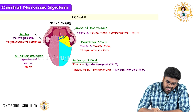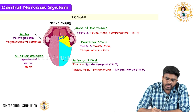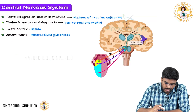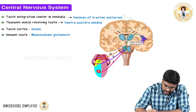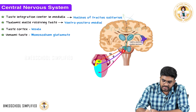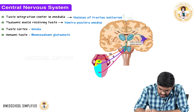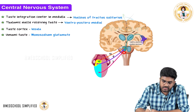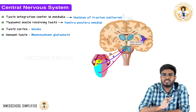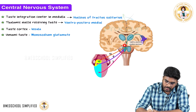Now where does the taste information go in the central nervous system? The 7th, 9th, and 10th cranial nerves take the taste fibers into the central nervous system. There is an area called the nucleus of tractus solitarius which receives the taste neurons — it is the taste integration center. These first-order neurons come to the nucleus of tractus solitarius.